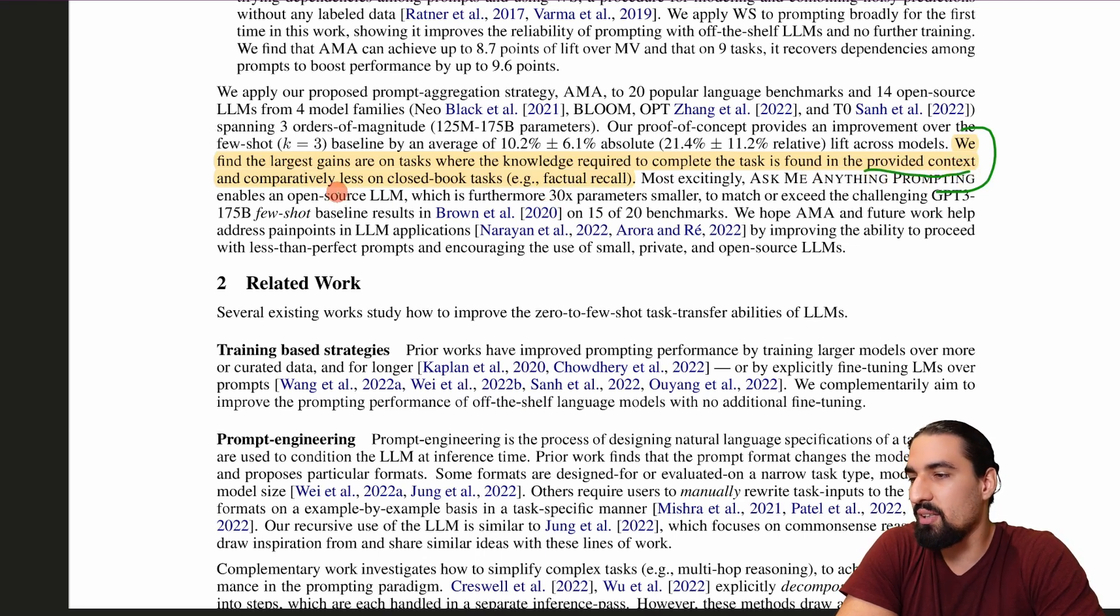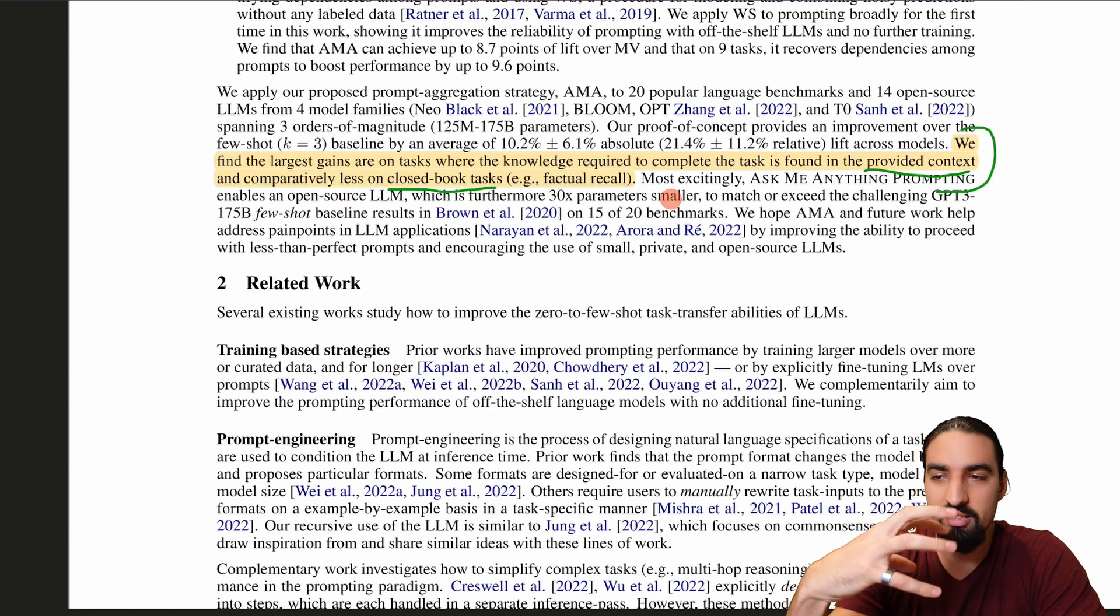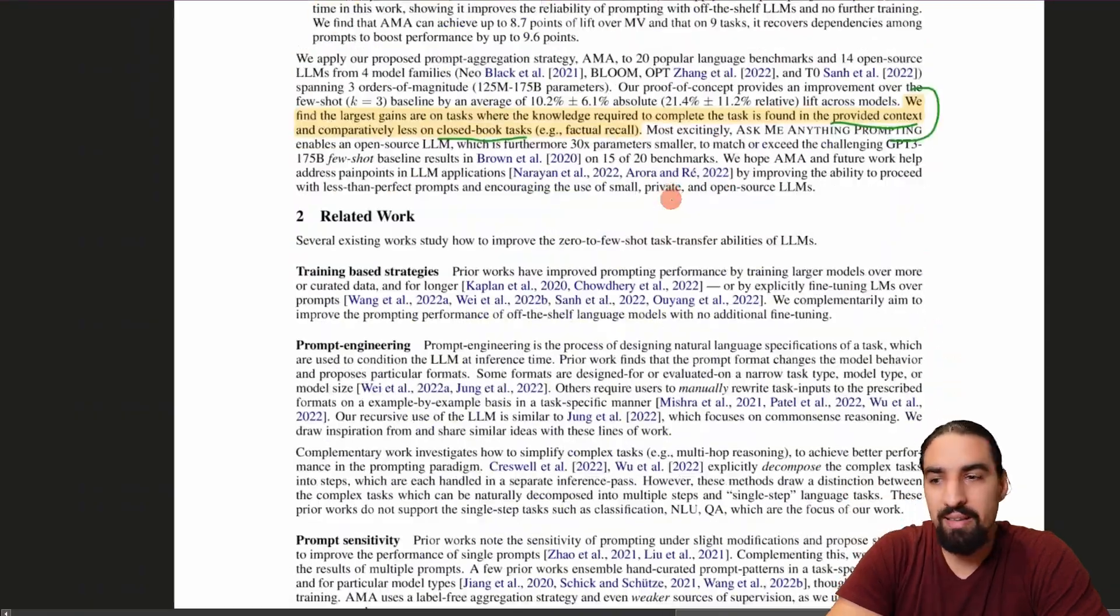So they say here, we find the largest gains are on the tasks where the knowledge required to complete the task is found in the provided context. And comparatively less on closed books tasks, for example, factual recall. So the idea is if the answer is already somewhere in the actual context of your input task, then this performs very nicely.